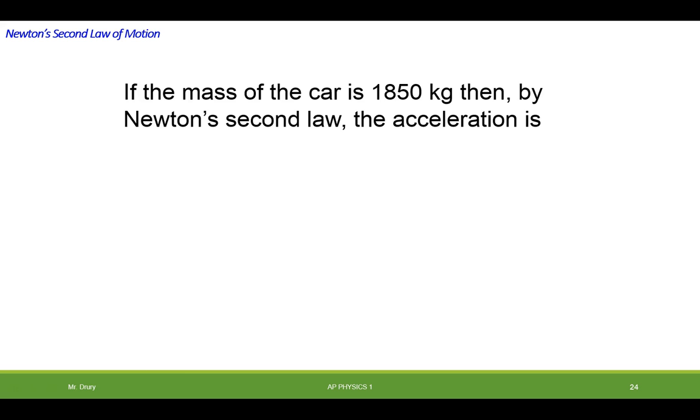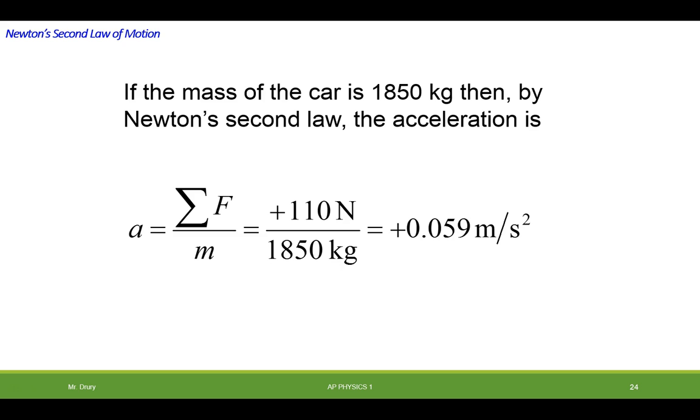Okay, and if we know the mass of the car, then we can actually use our equation of Newton's second law to figure out its acceleration. Because we know that acceleration is equal to the sum of the forces, which we just calculated, divided by the mass. And therefore, we get the acceleration of the car. And you can see the acceleration is pretty low. It's less than a meter per second squared.